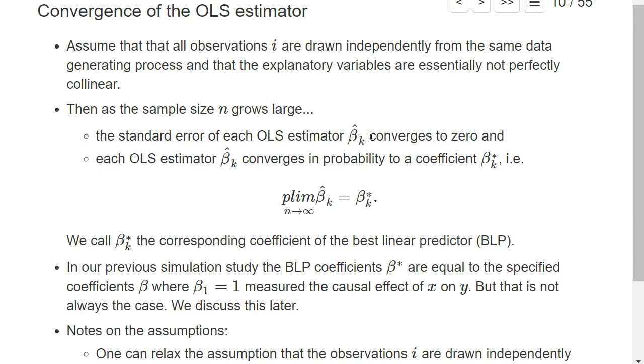As the sample size goes large, the OLS estimator beta hat_k converges against some number, and we call this coefficient beta star_k. It's often referred to as a coefficient of the best linear predictor.